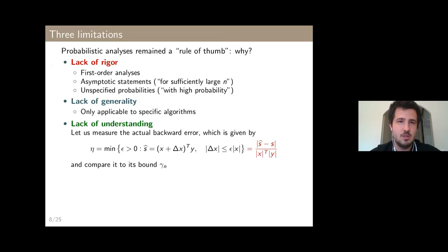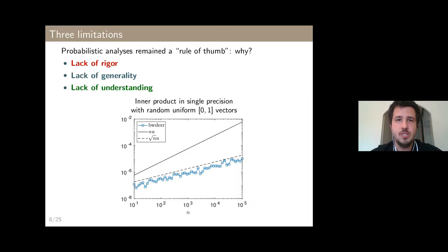To illustrate this, I show experimental results with inner products of dimension n. The worst-case bound is gamma_n, and I compare it to the actual true backward error. For an inner product in single precision with random vectors whose entries are sampled from the uniform [0,1] distribution, we see that the backward error grows as sqrt(n)*u. So here, the rule of thumb is a very good prediction of what actually happens.